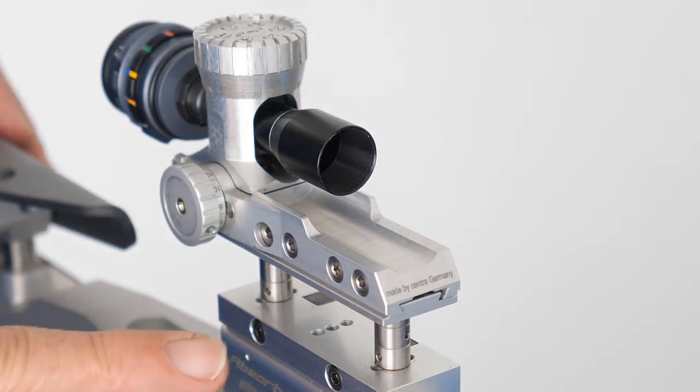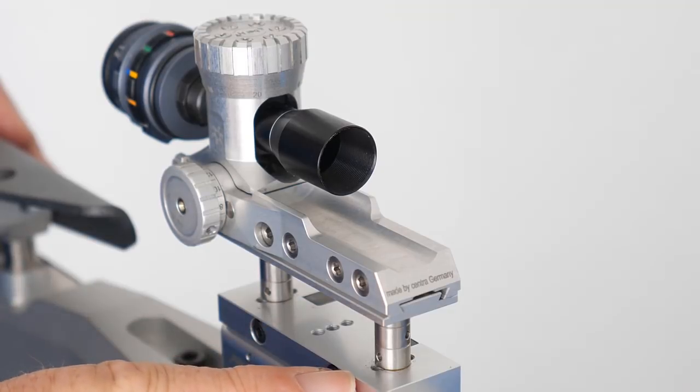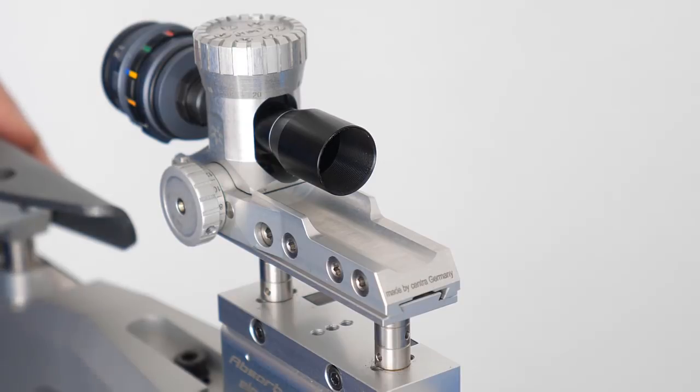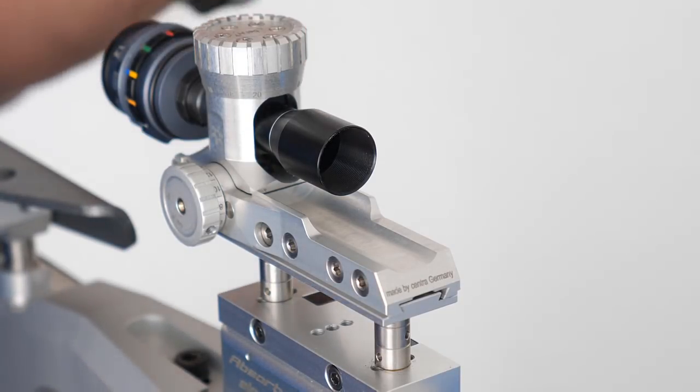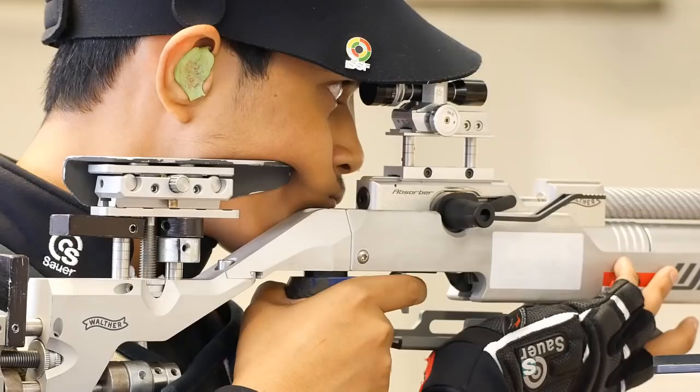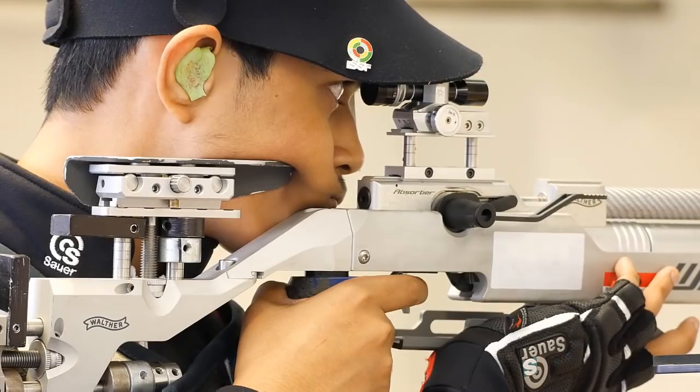The second movement you can do with your diopter is the height. Most shooters use an elevation just to get higher with the head and to find a more comfortable position.